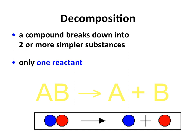Decomposition is basically the reverse of synthesis reactions. When you think of leaves decomposing, they're going from a more complicated molecular structure and breaking down into their original elements. Decomposition is the breakdown of a substance into two or more simpler substances. In these types of reactions, you're only going to have one reactant — that's the complicated molecule that then breaks down into simpler substances.